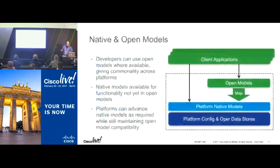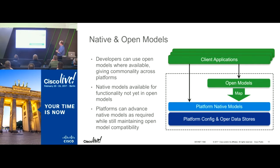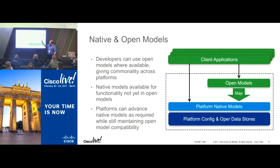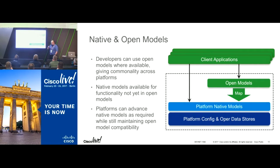How do we do this in our platforms today? We have a generalized software architecture for supporting both native and open data models. Developers can use — and we advise they use — the open models where available, with the fallback of platform native models for full functionality access. Each of our platforms now has an integrated mapping layer which transforms from open models to native models, ensuring that at the configuration layer we only store one representation of the configuration — so these models never get out of sync, with one consistent config and operational data store.